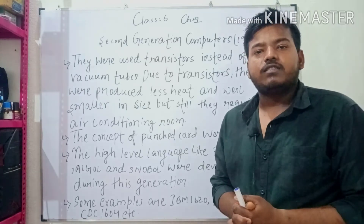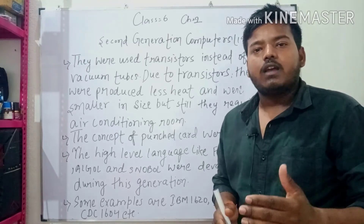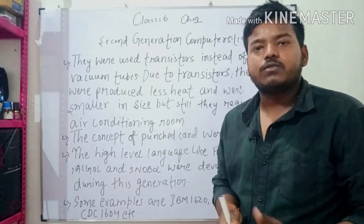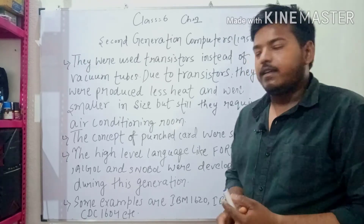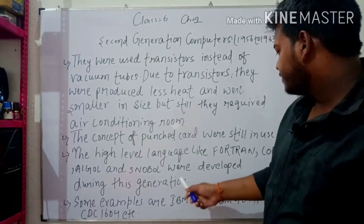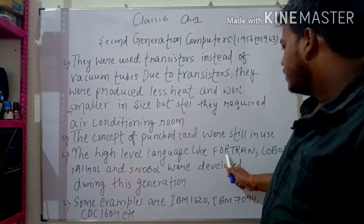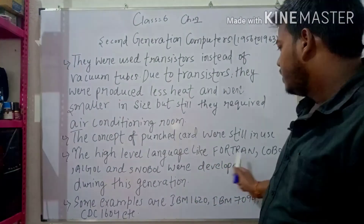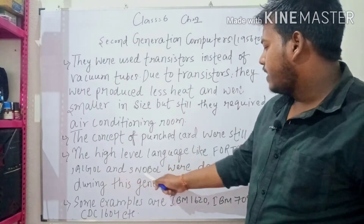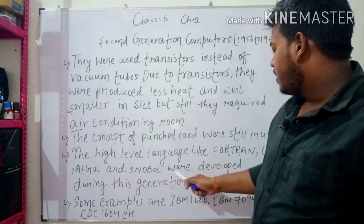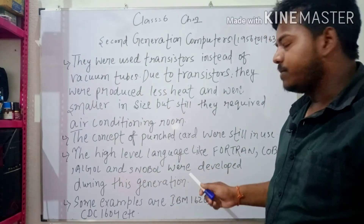In the Second Generation Computers, some high-level languages were developed, like Fortran, Cobol, Algol, and Snobol were developed in this generation.